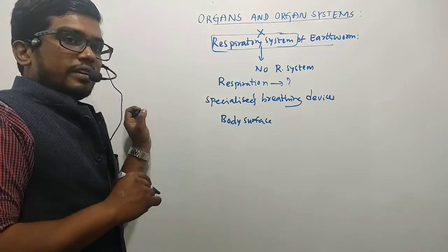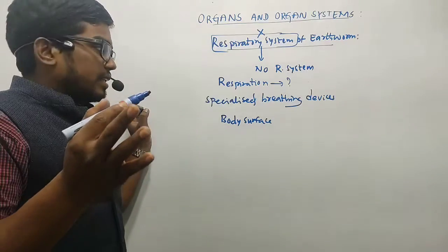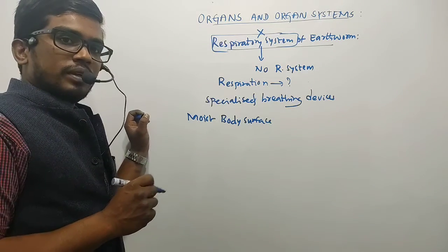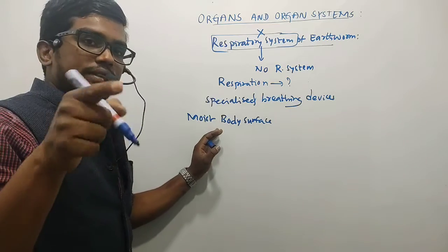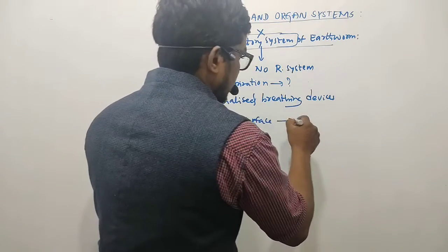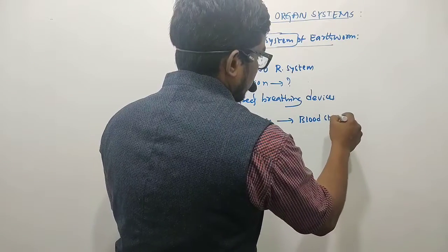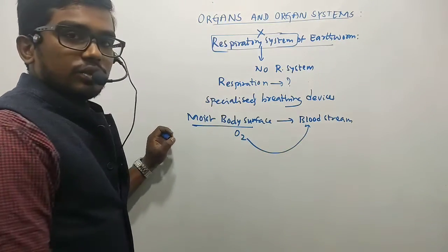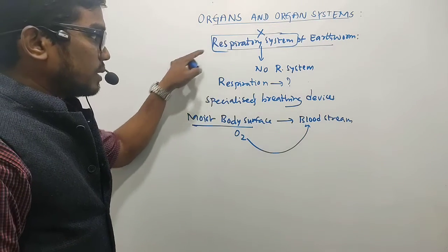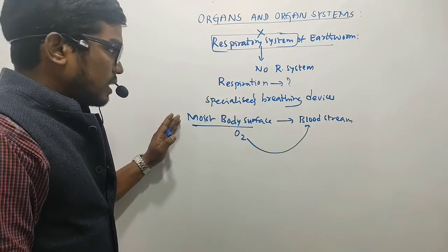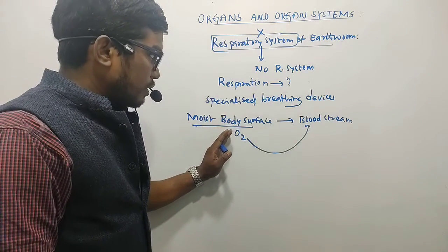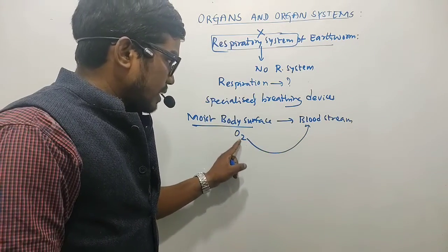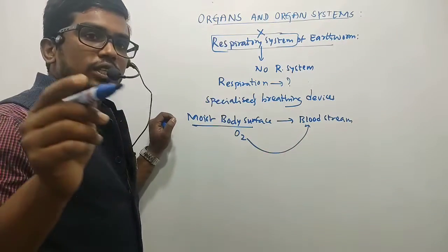These breathing devices are present on the body surface — specifically the moist skin present on their body surface. This moist body surface leads oxygen into the bloodstream. So the oxygen is taken in and transported directly to the bloodstream, even though there is no respiratory system.